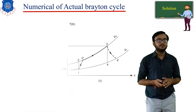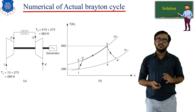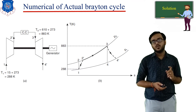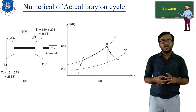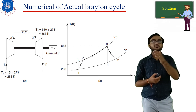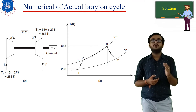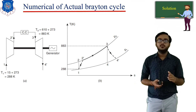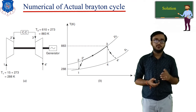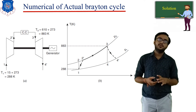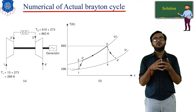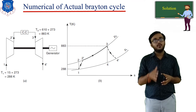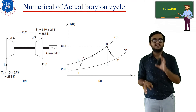Here we have the system diagram as well as the T-H diagram. Process 1 to 2 is compression, 2 to 3 is the combustion process, 3 to 4 is expansion, and 4 to 1 is heat rejection. First, plot the ideal cycle: 1, 2, 3, 4. When dealing with the actual cycle, you need to plot actual compression and actual expansion processes, which show an increase of entropy. Process 1 to 2 dash is actual compression with entropy increase, while 3 to 4 dash is actual expansion with entropy increase during the expansion process.